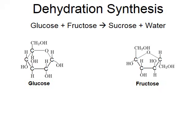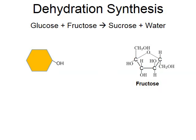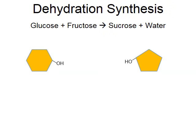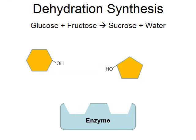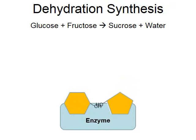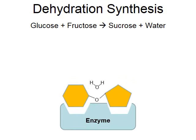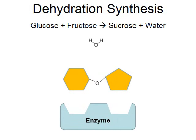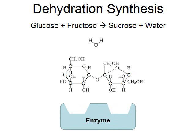Let's look at the role enzymes play in dehydration synthesis. Here's a molecule of glucose — drawn as a hexagon — and fructose on the right — drawn as a pentagon. An enzyme with a proper active site for glucose and fructose will have those two molecules as its substrates. Glucose and fructose fit into the active site, water is removed, and in the process glucose and fructose bond together to make sucrose — a larger molecule. This is the role that enzymes can play in building molecules as well, not just breaking them down.